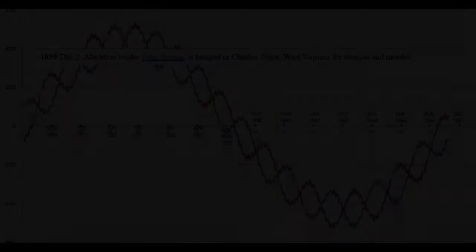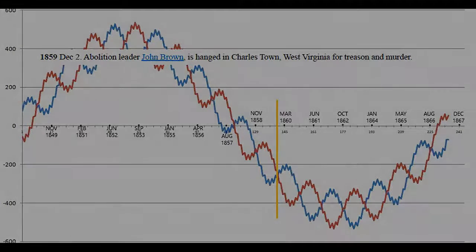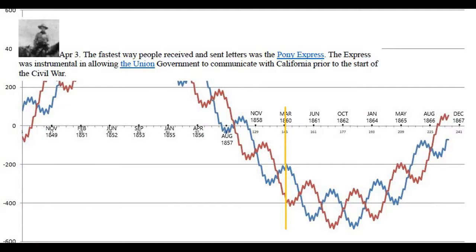On December 2nd, 1859, abolitionist leader John Brown is hanged in Charlestown, West Virginia for treason and murder. That's in December, so it should be just before the crossing point on the wave. The tip and the bottom of every wave will be in September because these are northern hemisphere people. Moving into 1860, on April 3rd the Pony Express begins, instrumental in allowing the Union government to communicate with California prior to the Civil War.